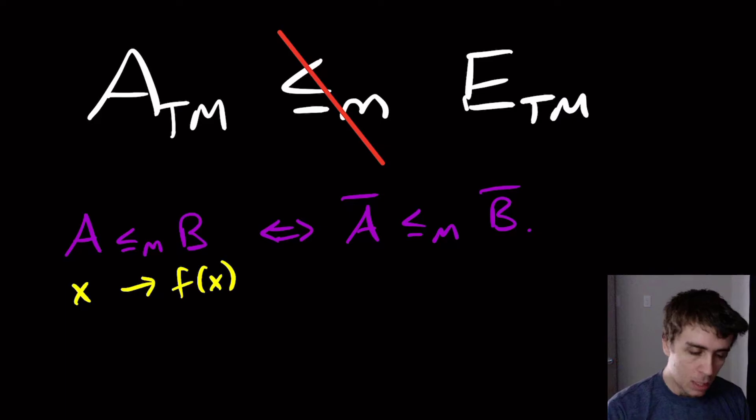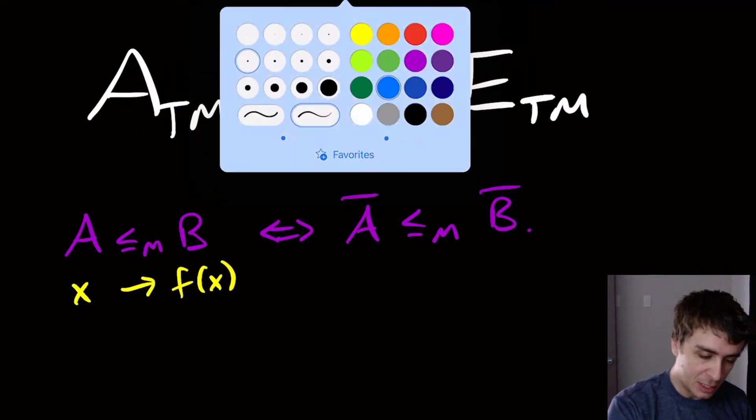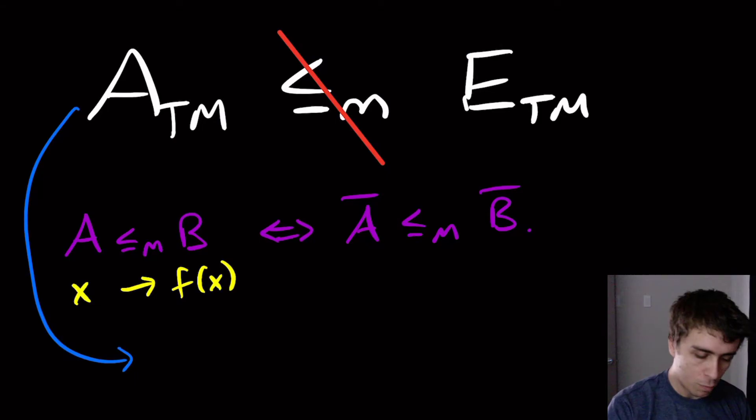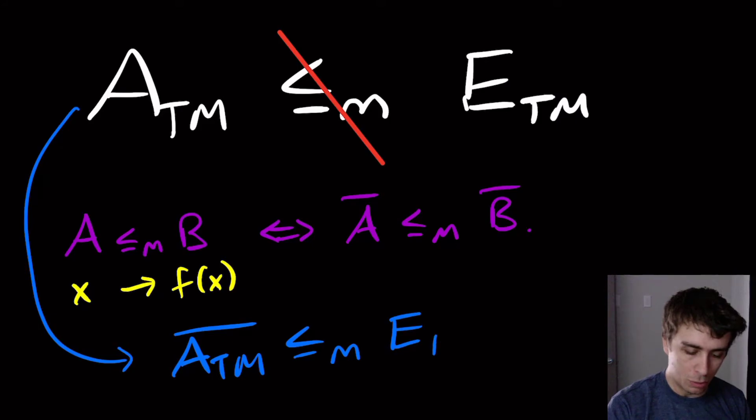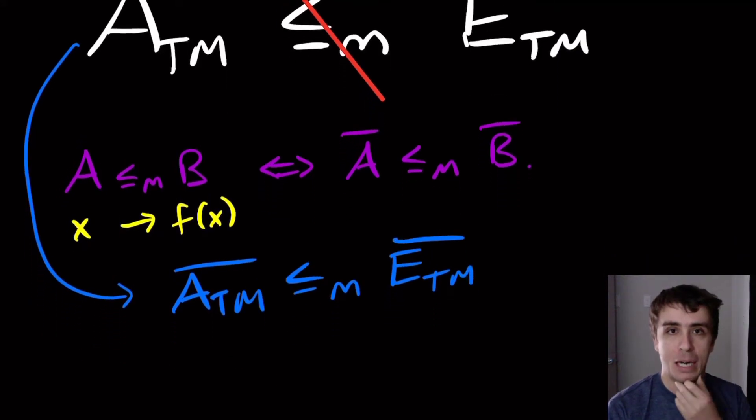So here we can actually rephrase this in a slightly different way. We can rephrase it as ATM complement mapping reducible to ETM complement. And I claim that that's not possible.